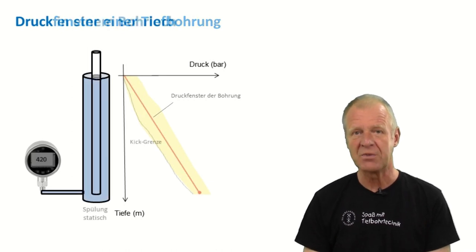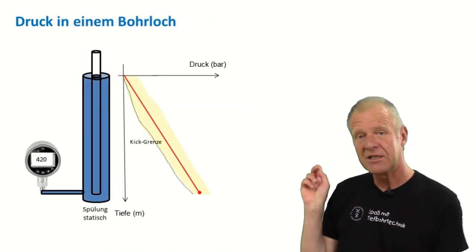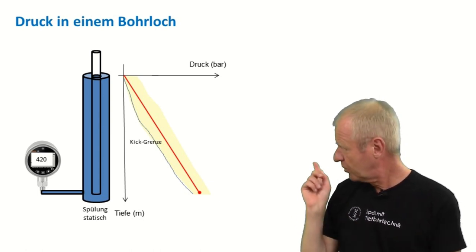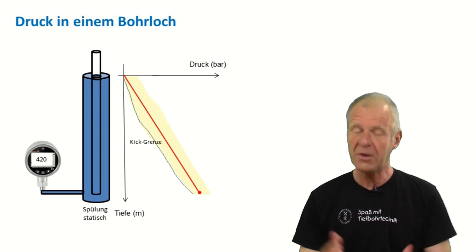In order to avoid a kick situation, we need to increase the density of our drilling mud so the pressure in the borehole is greater than the pressure of the fluid in the pore space of the surrounding rock.